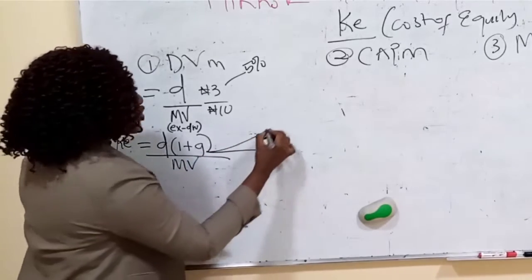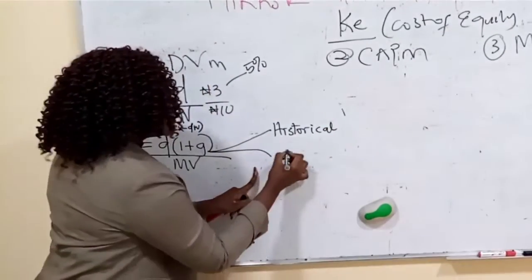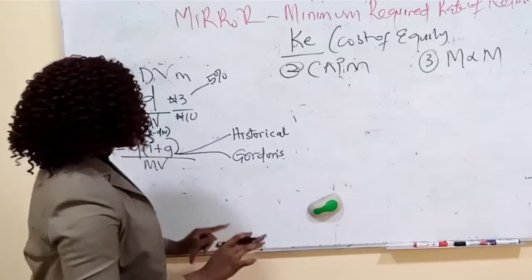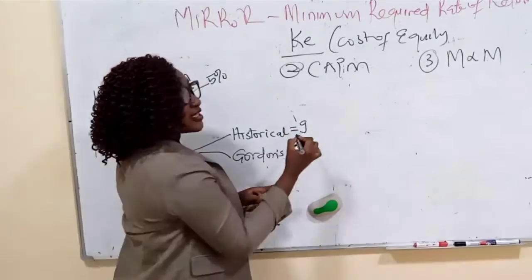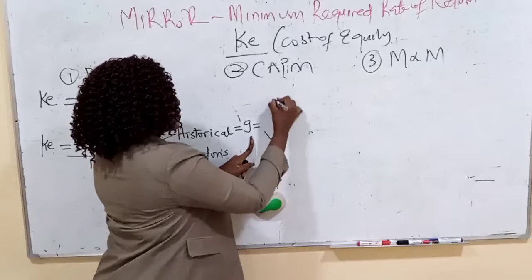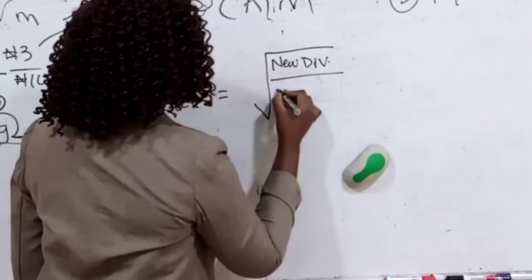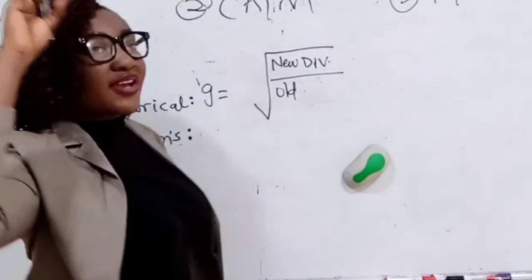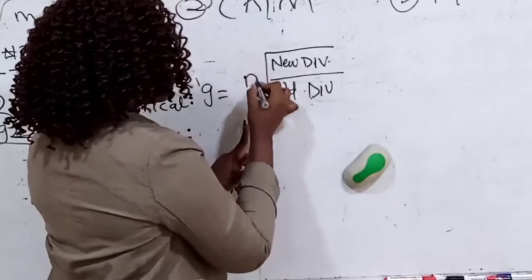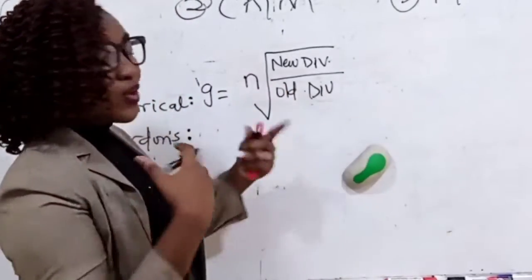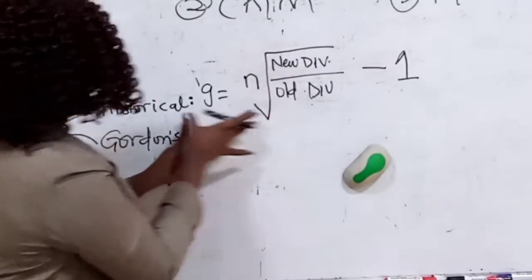There are two methods to determine growth. The first is the historical method, based on what the company has been doing before. The formula for the historical method is: growth equals the nth root of (latest dividend over oldest dividend) minus 1, where n is the number of years of dividend data provided. This is how to calculate the growth rate using the historical method — you apply it based on the information given.